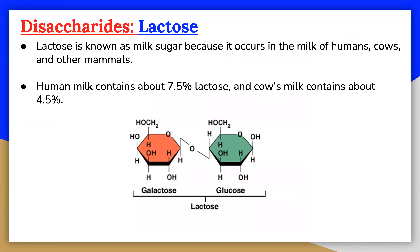Lactose is known as milk sugar because it occurs in the milk of humans, cows, and other mammals. The natural synthesis of lactose occurs only in mammary tissue, whereas most other carbohydrates are plant products. Human milk contains about 7.5% lactose and cow's milk contains about 4.5%. This sugar is one of the lowest ranking in terms of sweetness, being about one-sixth as sweet as sucrose. Lactose is produced commercially from whey, a by-product in the manufacture of cheese, and is important as infant food and in the production of penicillin.